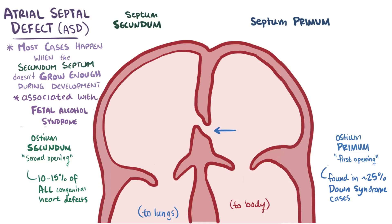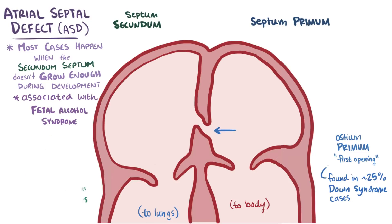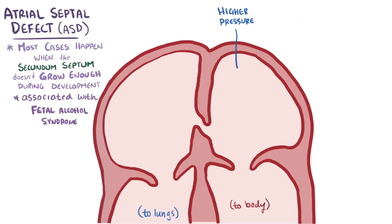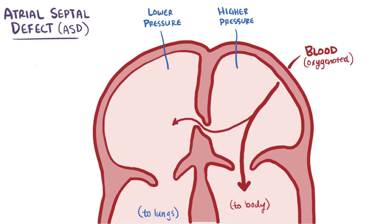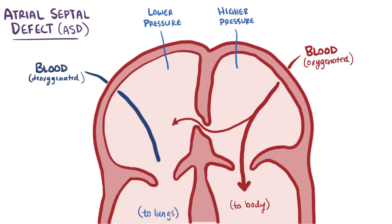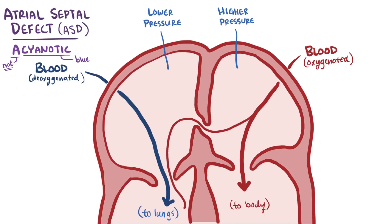So there's this opening in the septum — now what? Well, pressure is higher on the left side than on the right, and this pressure difference causes blood to be shunted from the left atrium to the right atrium, meaning more oxygenated blood gets over to the right side, which is usually deoxygenated blood. This type of defect is an acyanotic heart defect, which means not blue, since oxygenated blood is going into the pulmonary circulation and essentially taking an extra trip to the lungs.